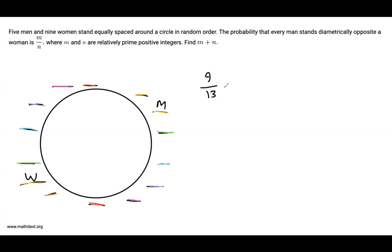Now, if a man ends up on that yellow spot, we've basically already failed. So we can just consider the 9/13 probability that this does happen. Now we have four men and eight women.